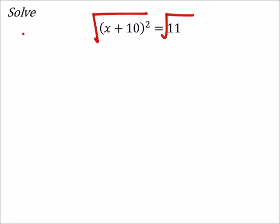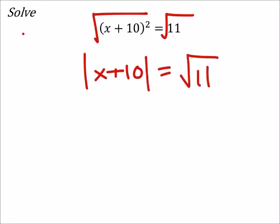Now that's going to get rid of my square, but it's also going to give me an absolute value of x plus 10. And that's going to equal the square root of 11.